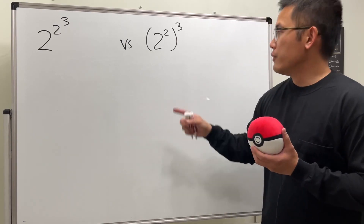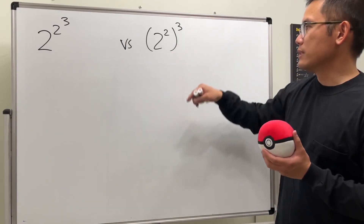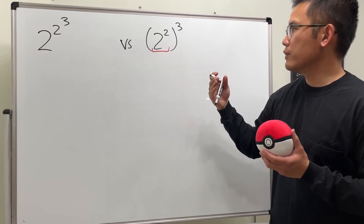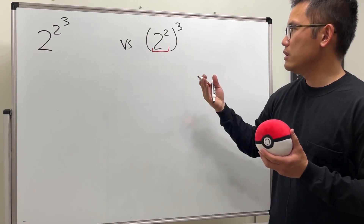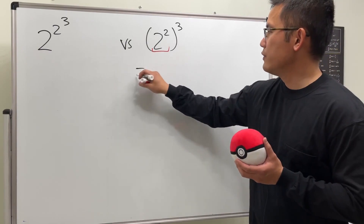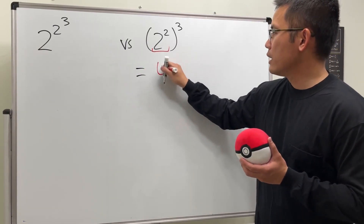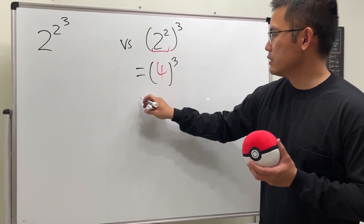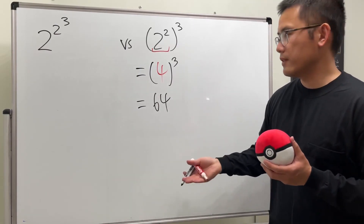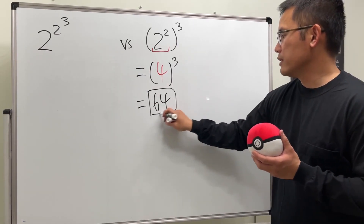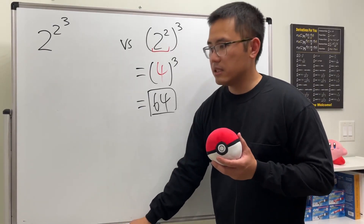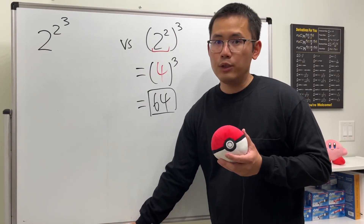Working from the inside out, we compute 2 to the second power, which is 2 times 2 = 4. Then we raise that to the third power: 4 times 4 times 4, which gives us 64. So the answer is 64.